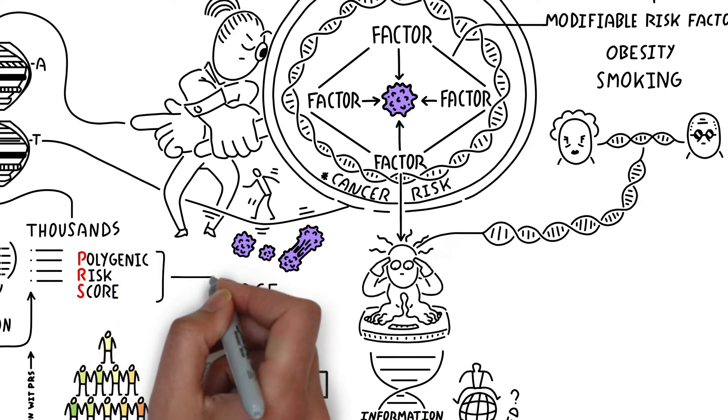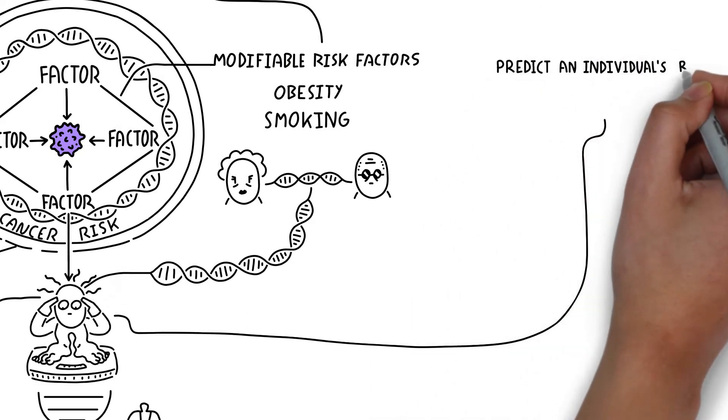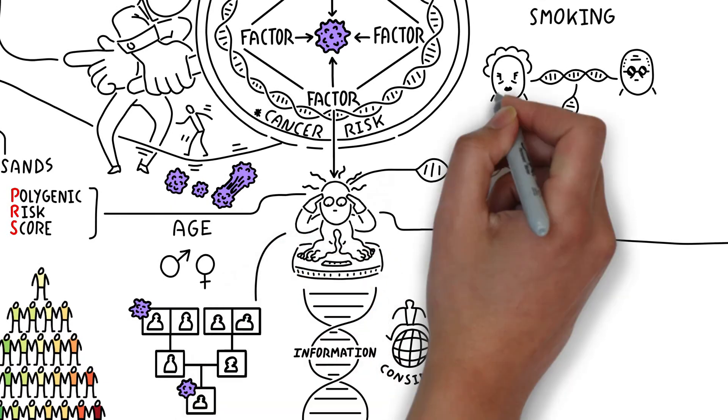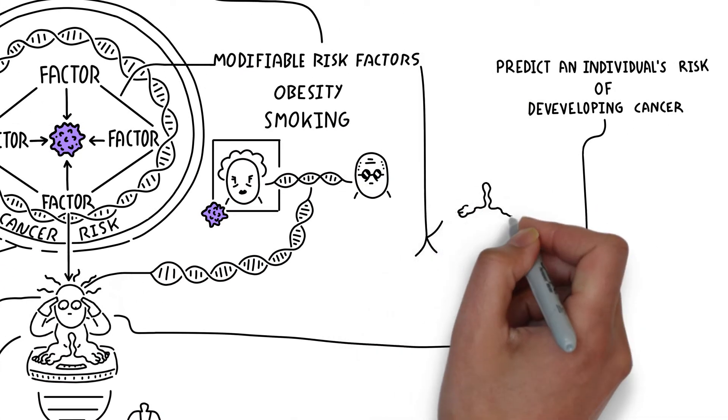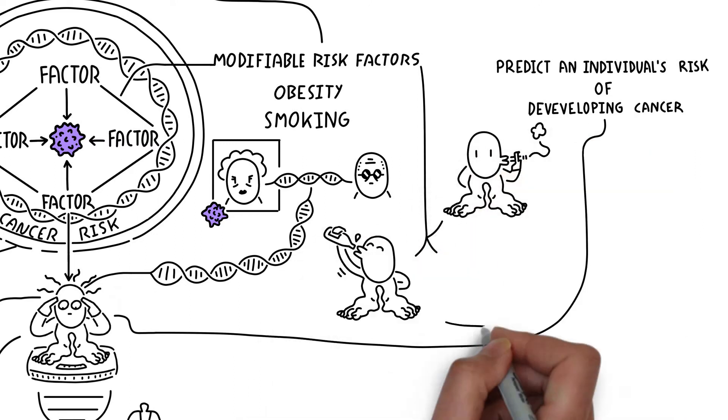Our main finding was that taking polygenic risk scores into account substantially improved their ability to predict an individual's cancer risk, even after considering their family history and modifiable risk factors, such as smoking, alcohol consumption, and body mass index.